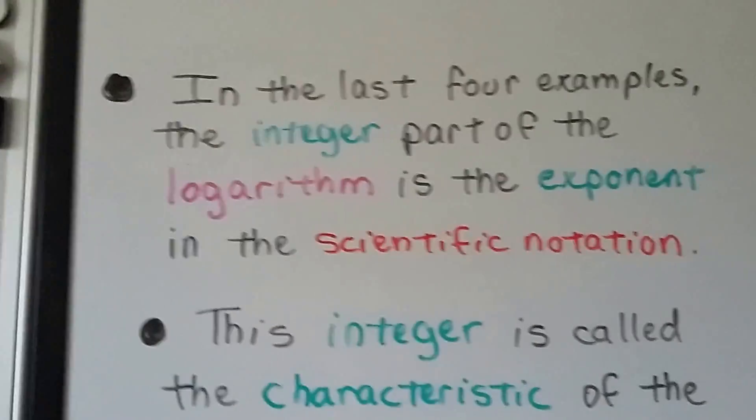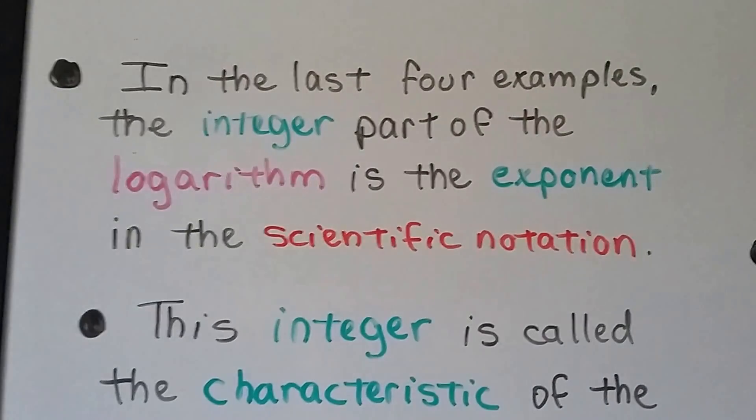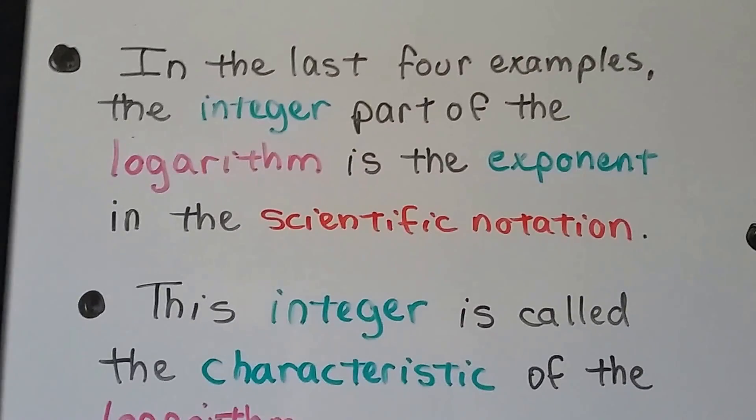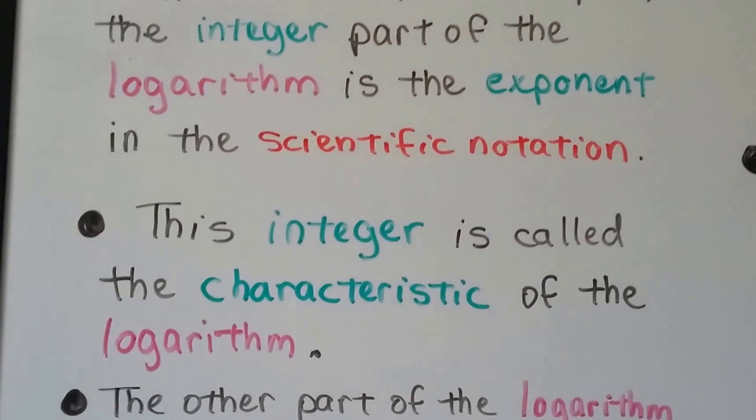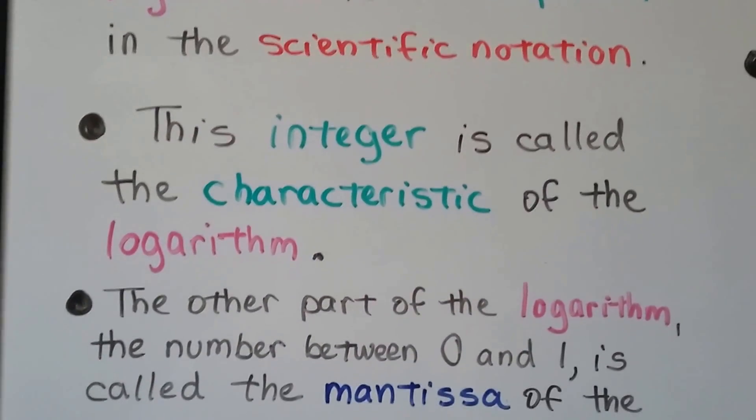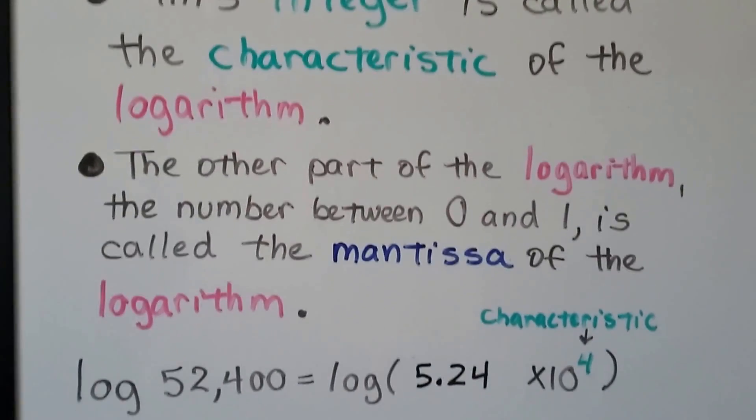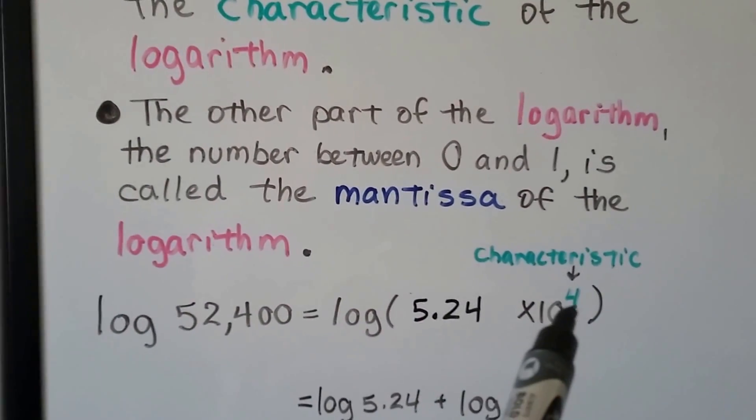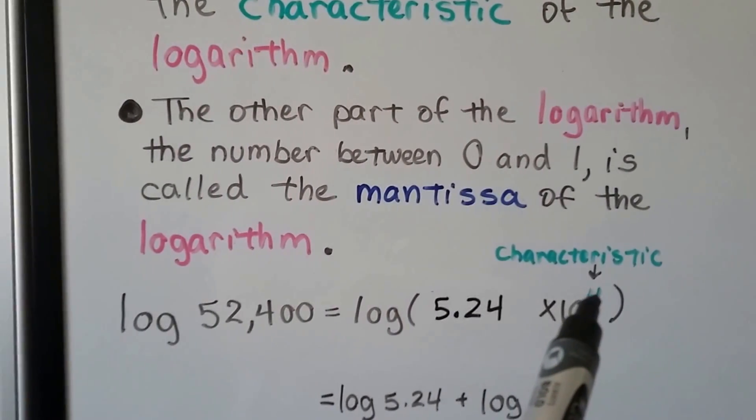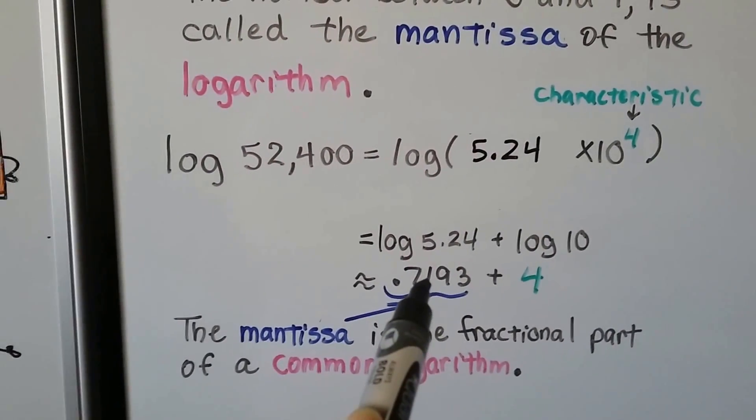So in these last four examples, the integer part of the logarithm is the exponent in scientific notation. The integer is called the characteristic of the logarithm. And the other part of the logarithm, the number between 0 and 1, is called the mantissa of the logarithm. So that's the characteristic. It's the exponent. And that's the mantissa.